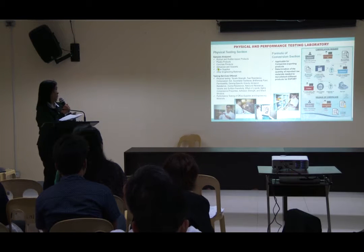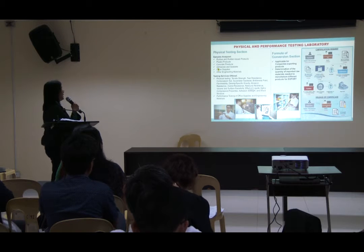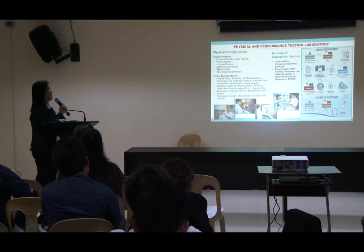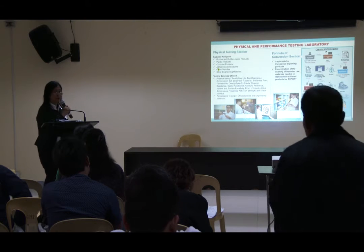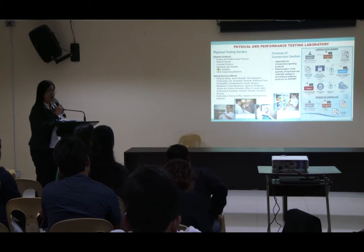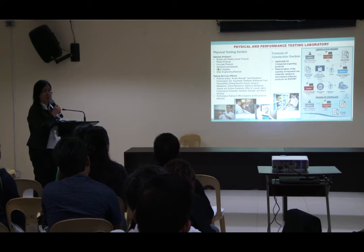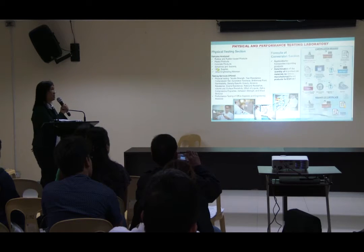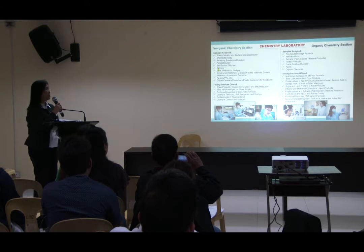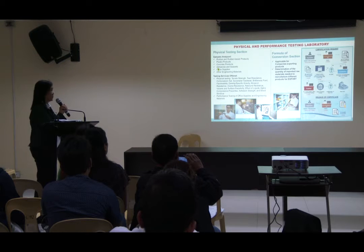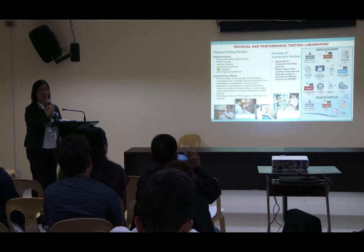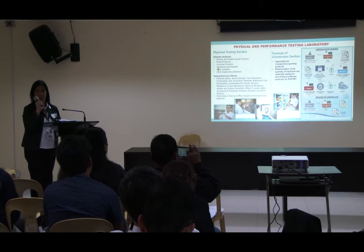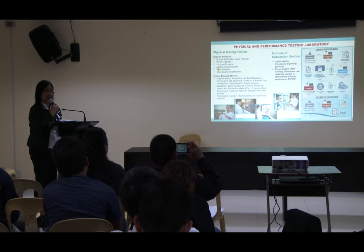For the physical testing, which I am going to present to you, we have two sections: the physical testing section and the formula conversion section. In the physical testing section, we analyze rubber and rubber-based products and plastic products — particularly the testing of plastics adapted to testing of composite materials as an alternative to fiberglass. We also issue formula conversion to manufacturing companies that use imported materials and subsequently export the product to other countries, for the purpose of tax credit.